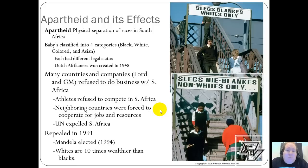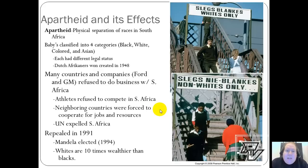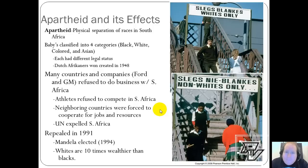As a result of apartheid, many countries and companies — Ford and GM among them — refused to do business with South Africa. Athletes refused to compete in South Africa, and the United Nations expelled South Africa from its membership because of apartheid. Eventually apartheid was repealed in 1991 under FW de Klerk, who also freed Nelson Mandela. Mandela ran for president and won in 1994, giving blacks in South Africa much more political power. However, economically whites are still ten times wealthier than blacks in South Africa, so while political equality has been largely achieved, economic equality is taking much longer.